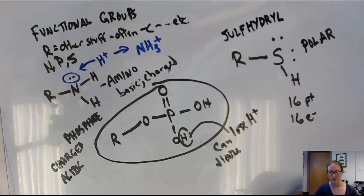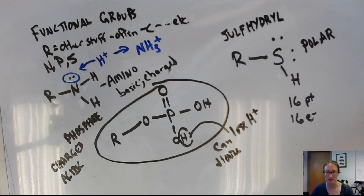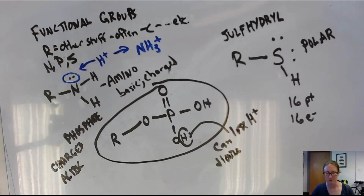With that, we've started to build up some more complex arrangements of carbon, and we've explored some of the major types of functional groups. Up next, we're going to take a look at how these pieces fit together to form the polymers that are the building blocks for the majority of molecules that make up living organisms. We'll have more on that for next week.